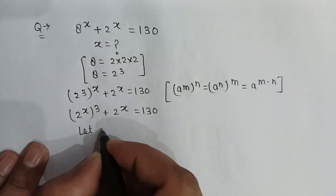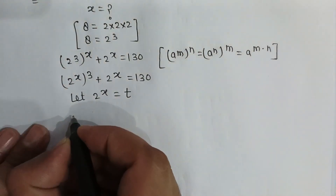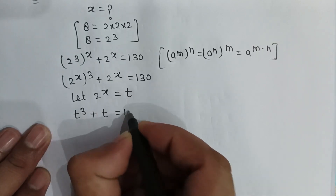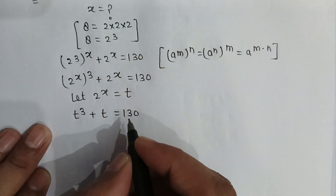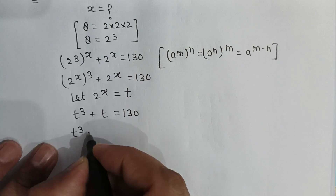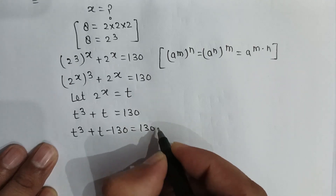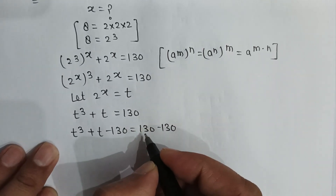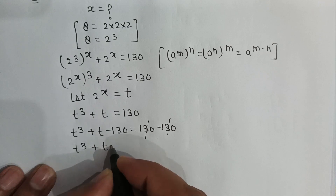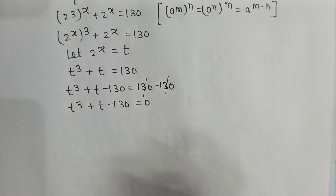Let's assume 2 to the power x is equal to t. So it will be t to the power 3 plus t is equal to 130. Subtracting 130 from both sides: t to the power 3 plus t minus 130 is equal to 0.